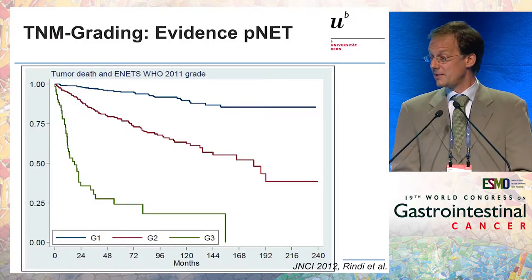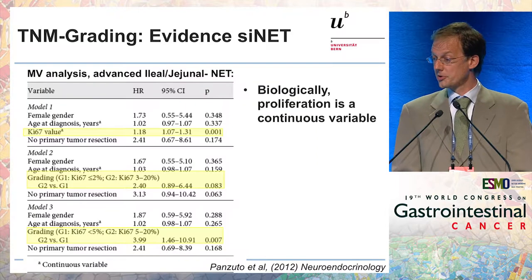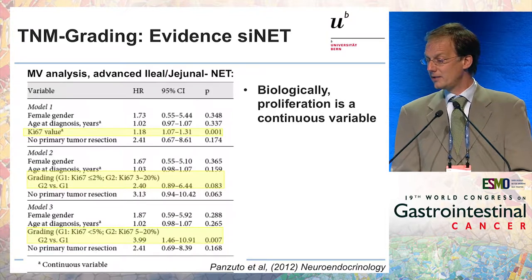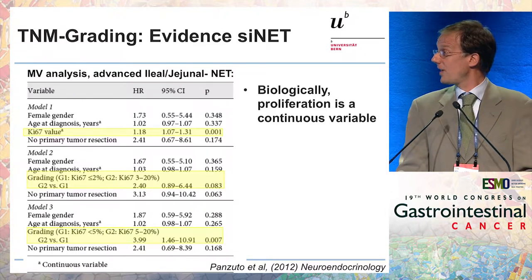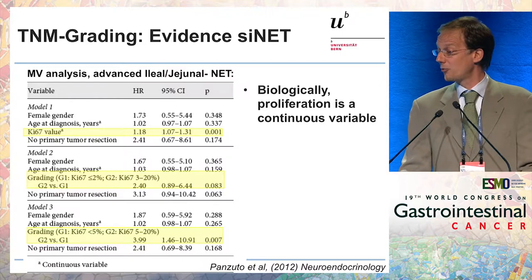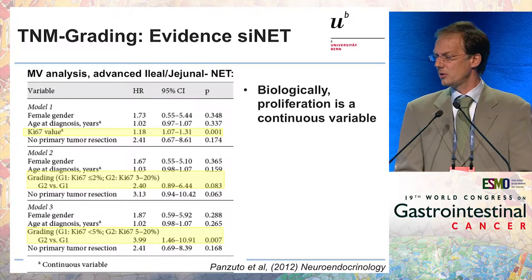Grading works. This is a multicenter retrospective study on several European centers examining the effect of grading on prognosis for pancreatic neuroendocrine tumors. Grading also works for ileal neuroendocrine tumors. The best significance is when grade is tested as a continuous variable, and biologically this makes a lot of sense — proliferation is a continuous variable, and the faster a neuroendocrine tumor proliferates, the shorter the time to relapse. So the discussion of whether the cutoff is better at 2%, 3%, or 5% is not very important; you need to know the exact number.